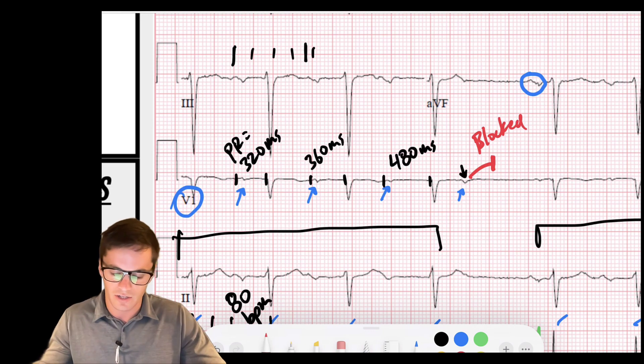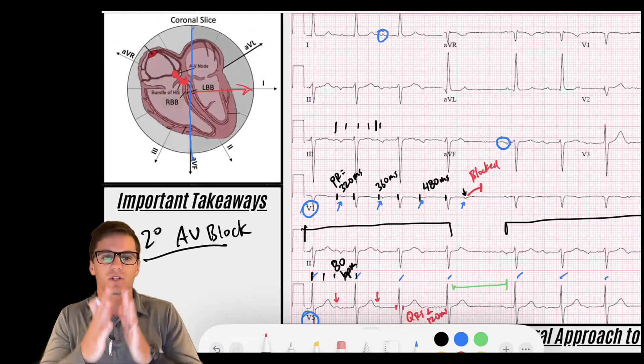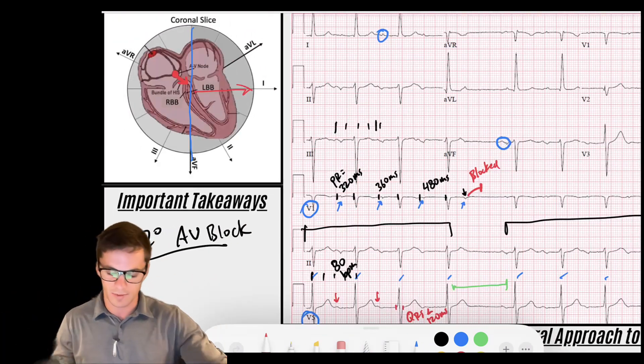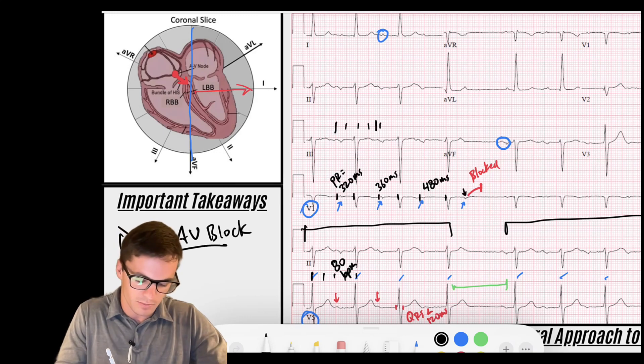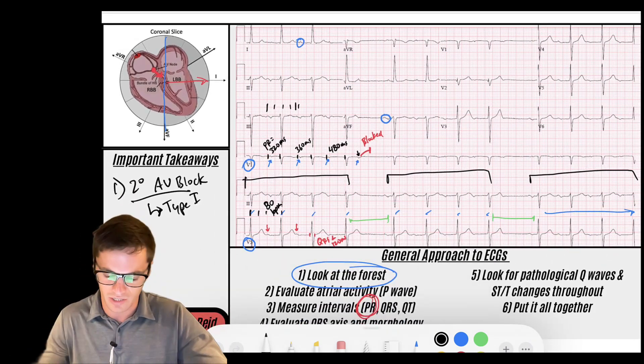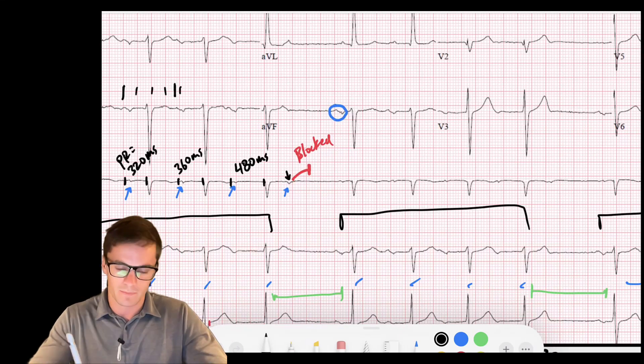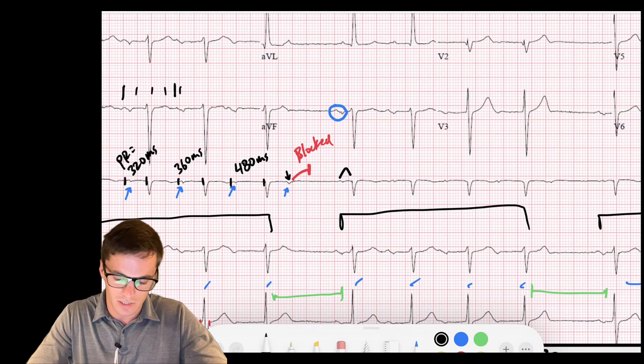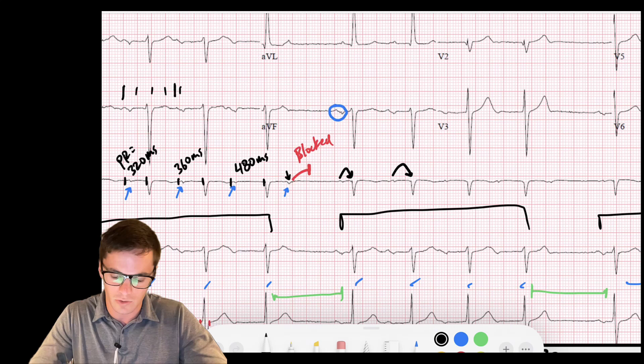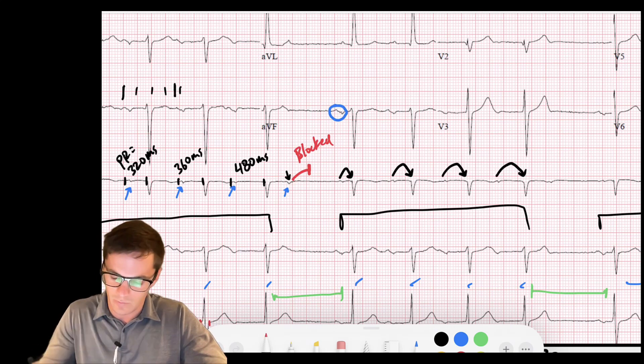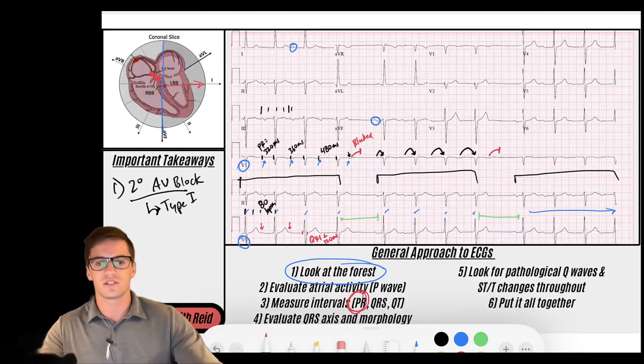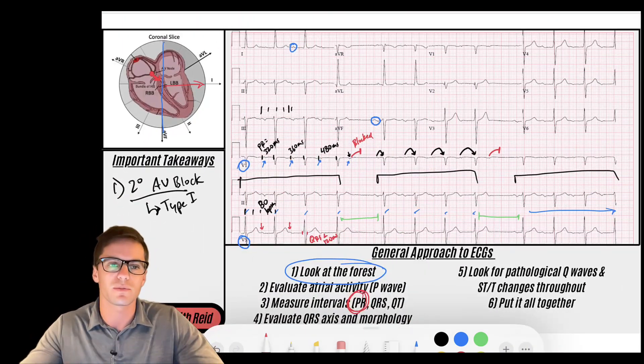So what kind of block occurs at the AV node when the PR interval gets worse and worse and worse, worse until it drops. This is a second degree AV block type one or Wenckebach, right? So we've got a second degree type one AV block and you can look at the rest. It resets. So after that blocked P wave, it resets and you have this P go to the QRS and this P goes to the QRS takes a little longer, a little longer, a little longer, and then we have another drop. So this is all characteristic of a type one AV block.